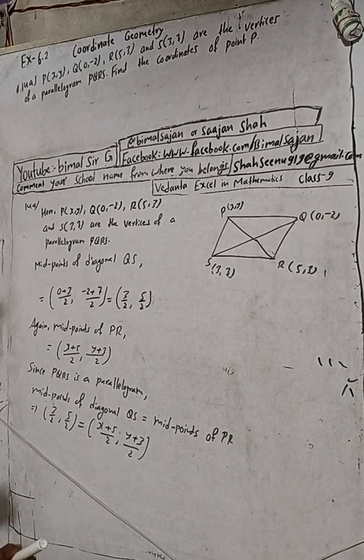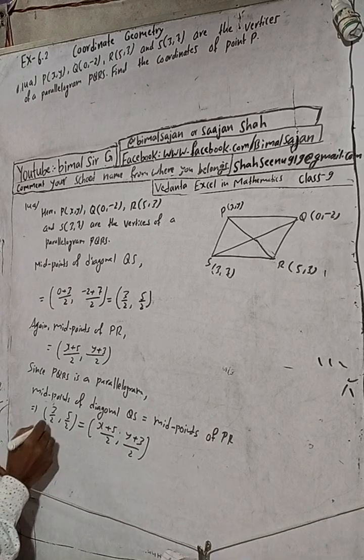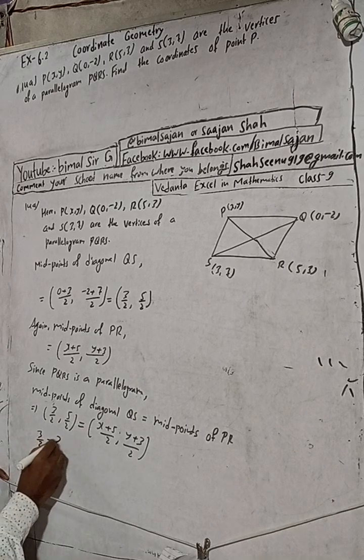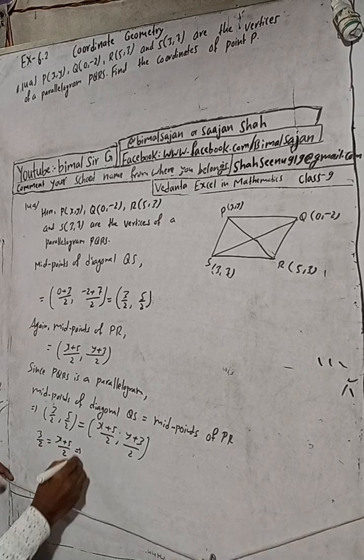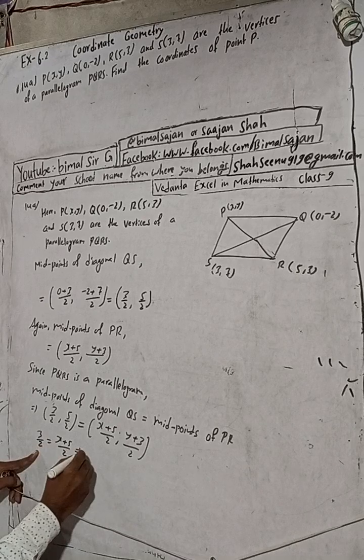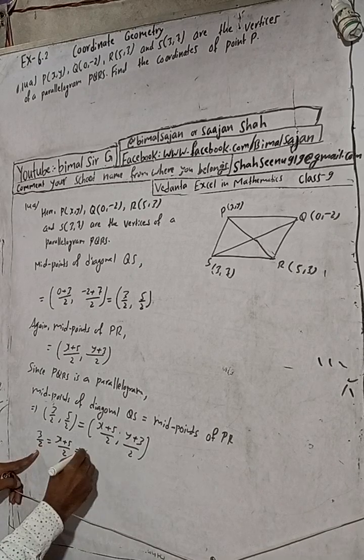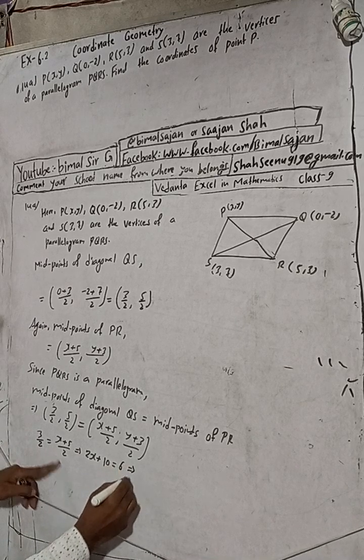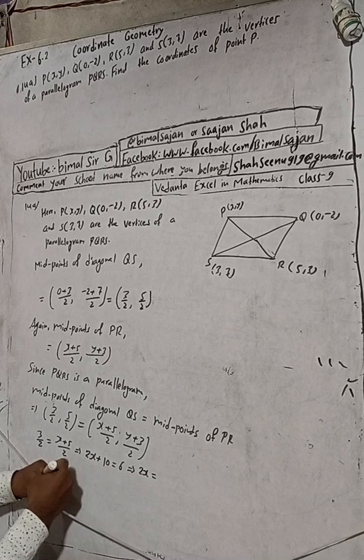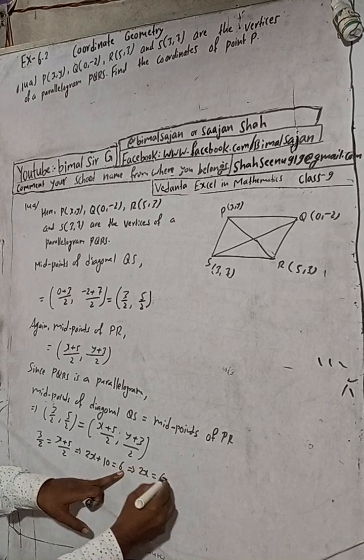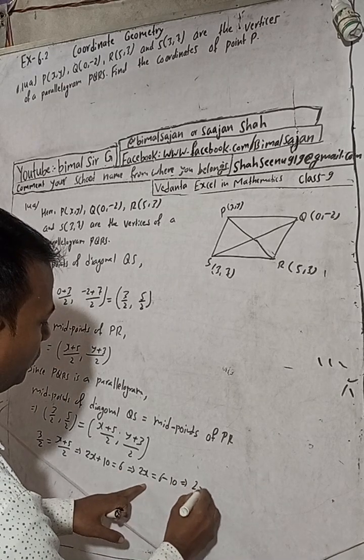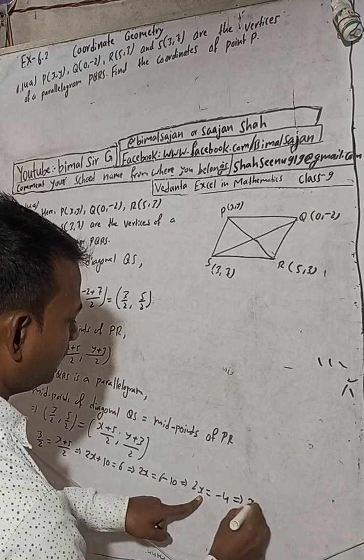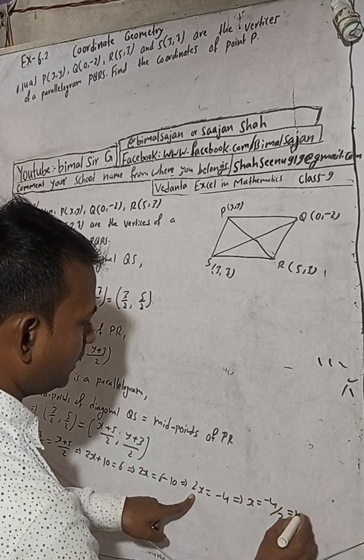Equating corresponding elements, we can write 3/2 = (x+5)/2. Solving this, cross multiply: 2x + 10 = 6. This implies 2x = 6 - 10. So 2x = -4, which implies x = -4/2. Therefore x = -2.